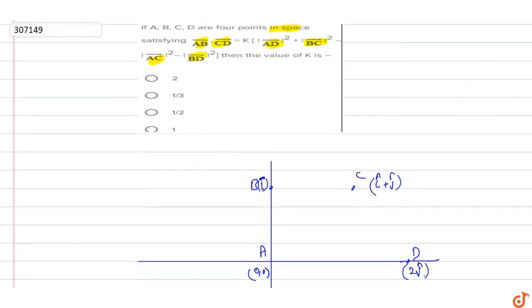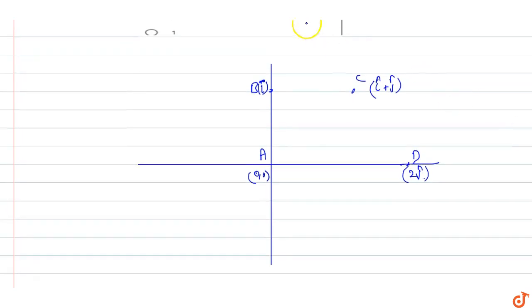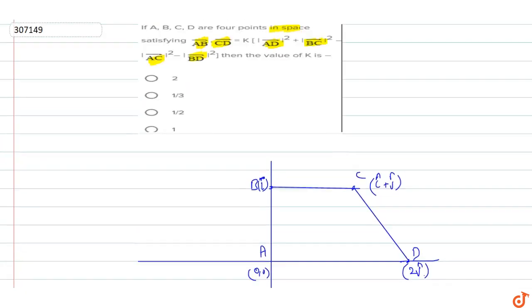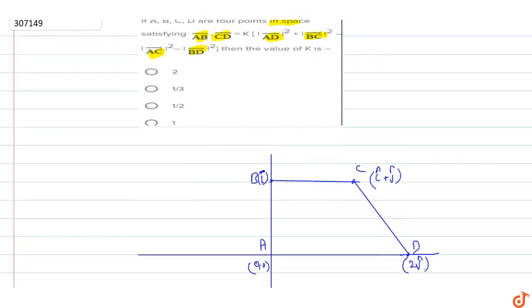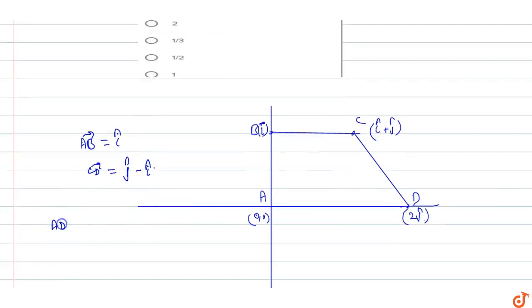We need to find AB dot CD. So AB vector is equal to i cap, and CD vector is j cap minus i cap.